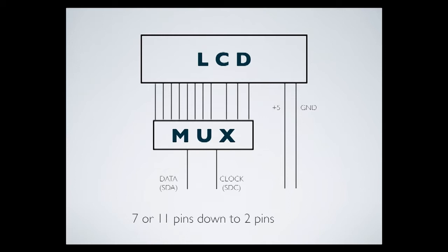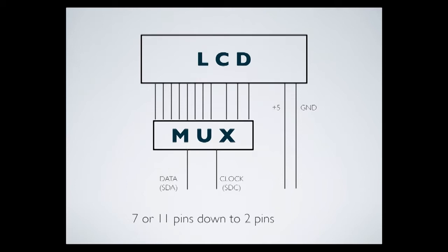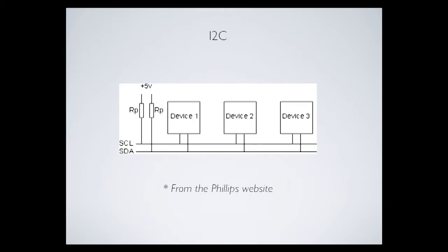Where it gets confusing is how you communicate with the LCD — there aren't many libraries out there, and the ones I found didn't work well. The MUX uses a protocol called I2C, a two-wire protocol with a clock wire (SCL) and a data wire (SDA). It was developed by Philips Electronics. Basically, you have one master and a bunch of slaves. The master can request information from or control any device that has an address on that line.